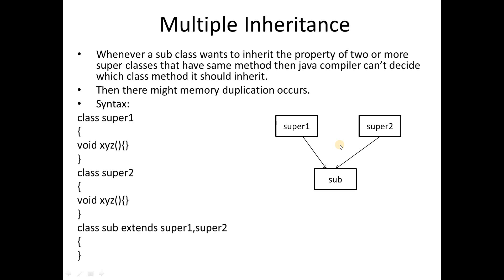Then what is the reason why we do not support multiple inheritance in Java? Let's see. First of all, here is class super1. In this class we have the xyz method. Another class super2, which is another parent class, also has the same method xyz. After that, our subclass extends from these two parent classes super1 and super2.